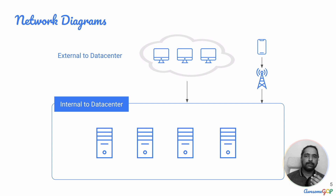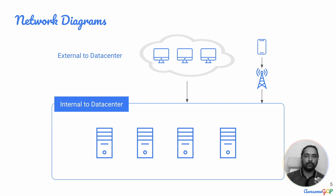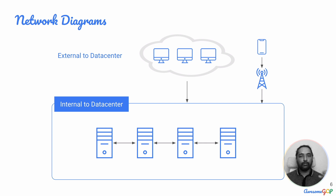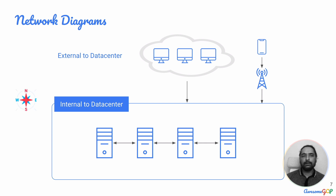Any traffic going from these external devices flows in a top-down approach — they flow from the top towards the bottom. And any traffic between applications or virtual machines that are within the data center goes horizontally in a left-right direction. With that clear, it is very easy to understand where the concept of north-south and east-west traffic comes from.